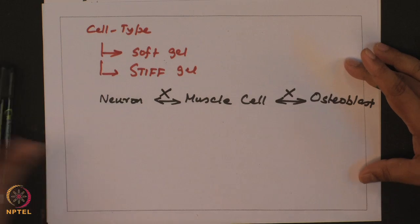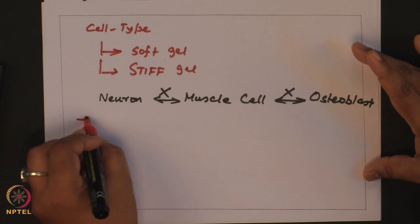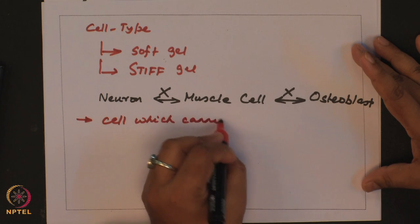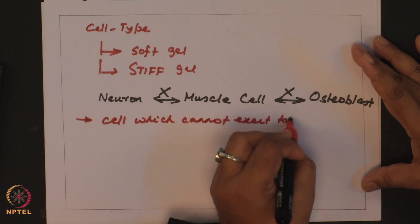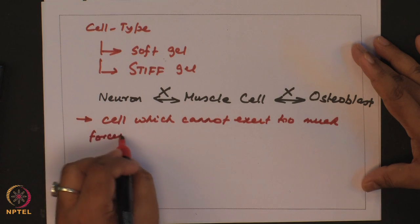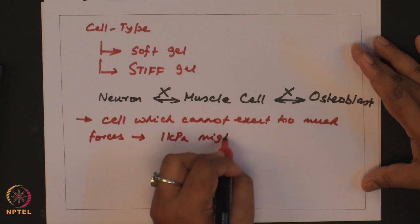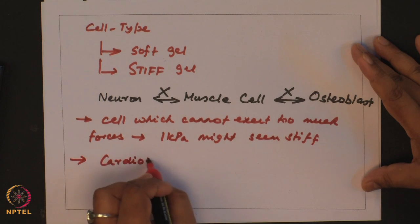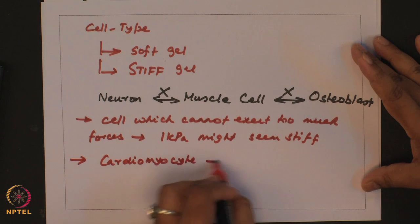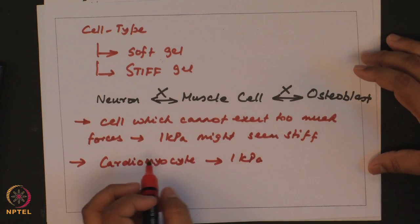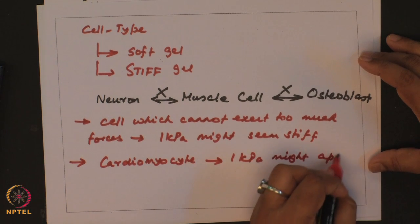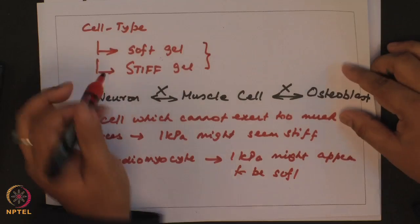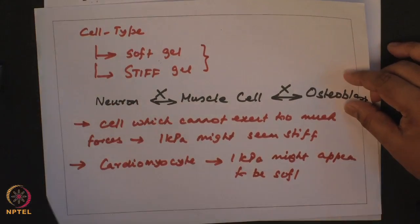And this perhaps depends on the ability to exert forces. A cell which cannot exert too much forces, even 1 kPa might seem stiff. Versus a cell, let's say a cardiomyocyte - cardiomyocytes are cells which exert a lot of contractile forces - 1 kPa might appear to be soft. So how do you find out given a cell type what is something as soft or what is something as stiff?